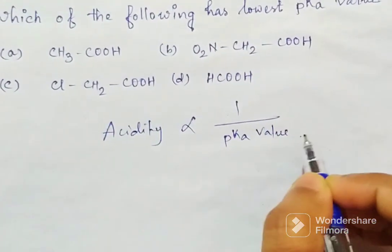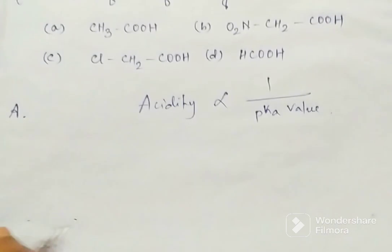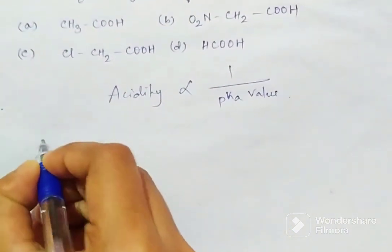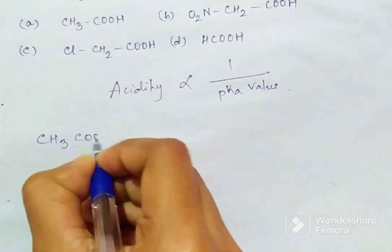Okay, now four compounds are given. Write down each compound and let's see which one is more acidic.